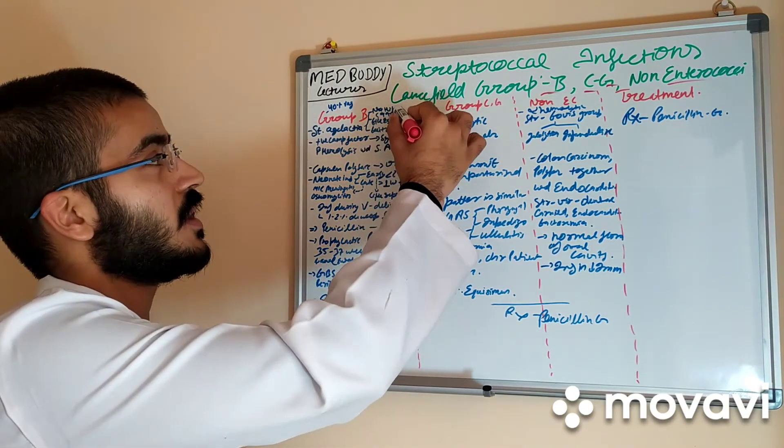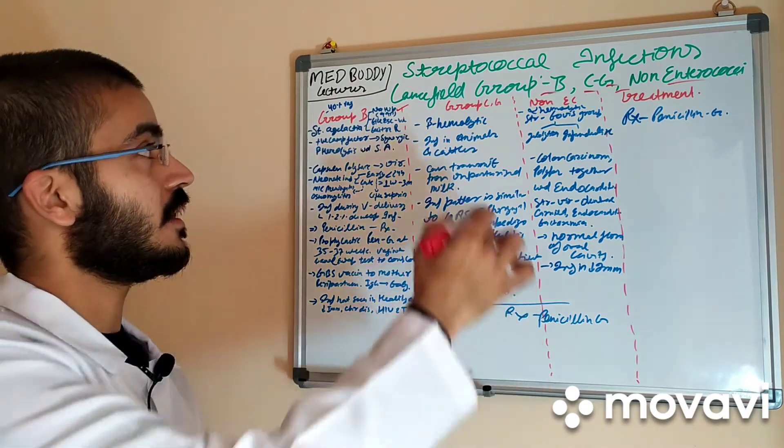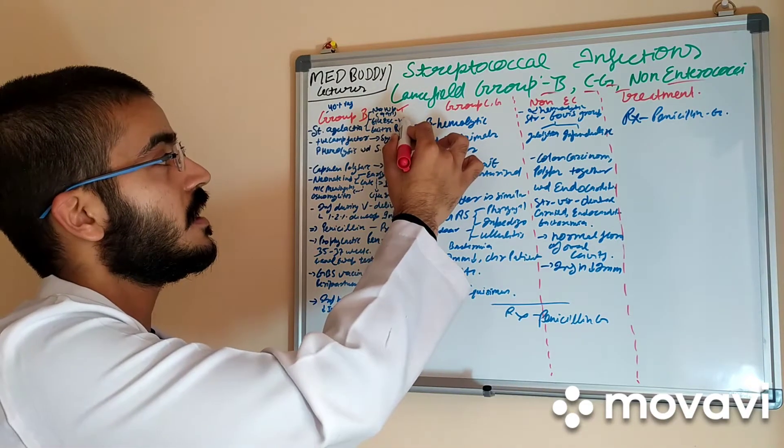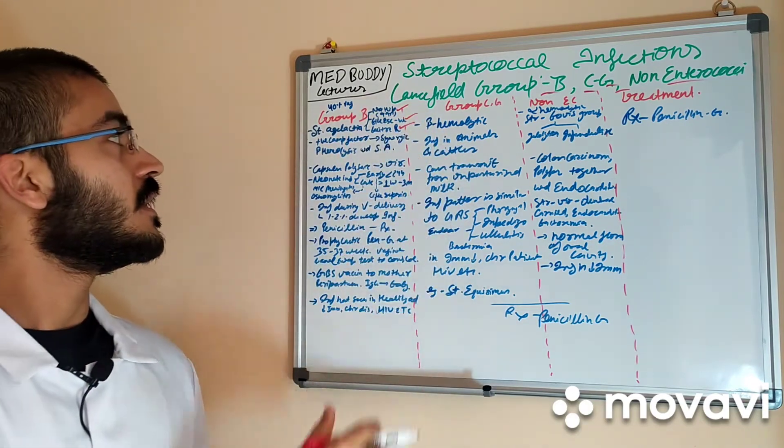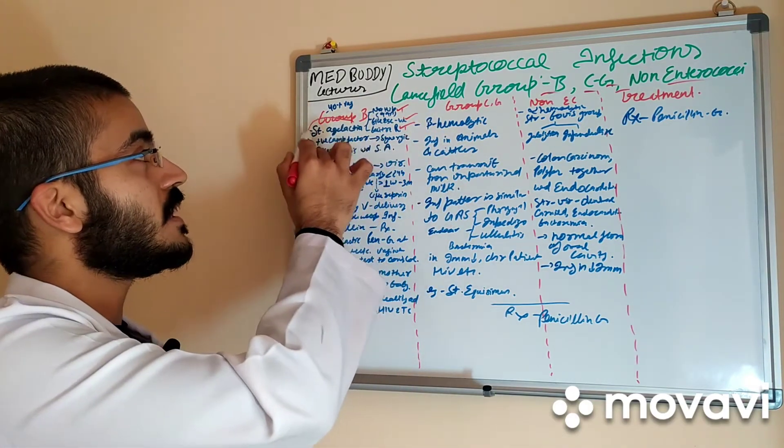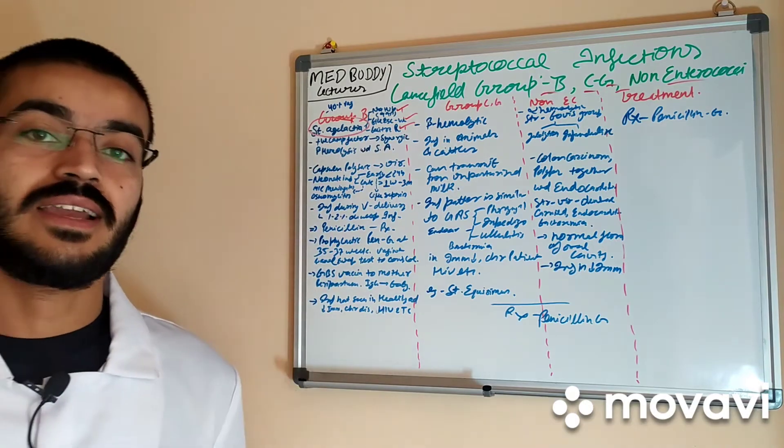It is sodium hippurate hydrolyzing bacteria. It does not hydrolyze bile esculin. It is resistant to bacitracin. An example of it is Streptococcus agalactiae.